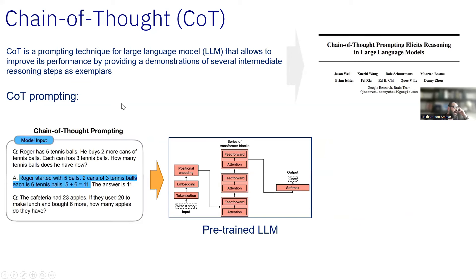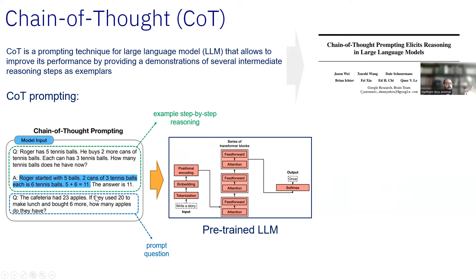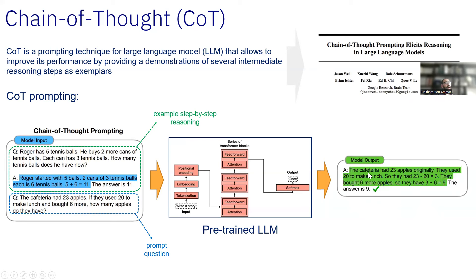Then came the paper where they actually give it intermediate reasoning steps as additional input. Instead of just putting the input, they also provide the answer with the intermediate reasoning step — 'Roger started with five balls, two cans of three tennis balls each, having six balls,' etc. Then they provide the question they are interested in, in addition to this set of reasoning steps or chains of thoughts. Now the model will output a set of reasoning steps and then give the right answer — the model constructed this step-by-step solution and arrived at the correct answer.